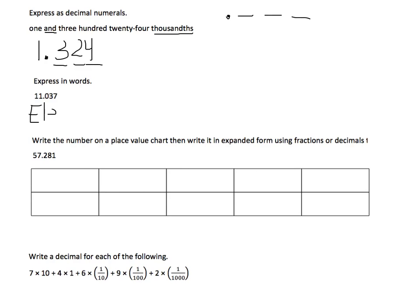11 and 37 thousandths. And I remembered to use 'and' where my decimal place is, and I made sure that I ended in the correct place value spot.